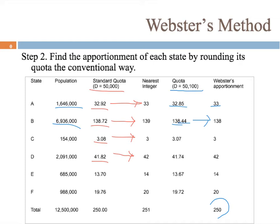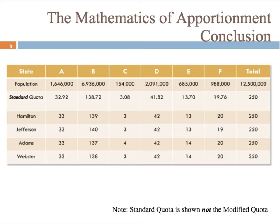So that's Webster's method. It's very similar to Jefferson's and Adams' method, except you're just using conventional rounding when getting the whole numbers for the seats for each state. Now we have a chart of all the methods with the results. The populations add up to 12,500,000, and with each method we found the divisor that worked and got those 250 seats in the end.